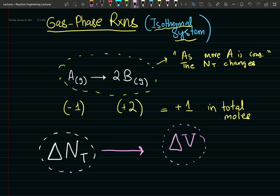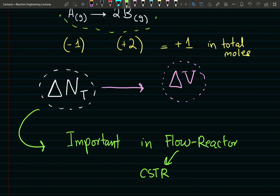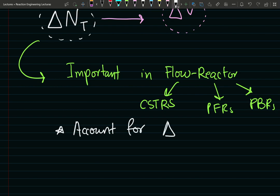This becomes important in flow reactors. This phenomenon becomes very important in flow reactors. When we design CSTRs and PFRs and PBRs for gas phase reactions, the changes in volumetric flow rate become important. We have to account for changes, deltas in volumetric flow rate.